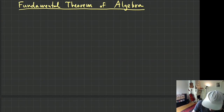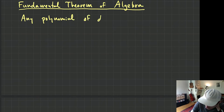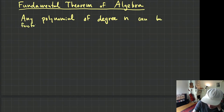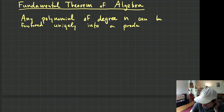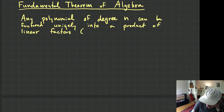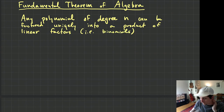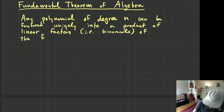The Fundamental Theorem of Algebra is a little more esoteric — you need some extra information to even understand what it's talking about. But the idea is that any polynomial of degree M can be factored uniquely into a product of linear factors — binomials of the form (x − a).